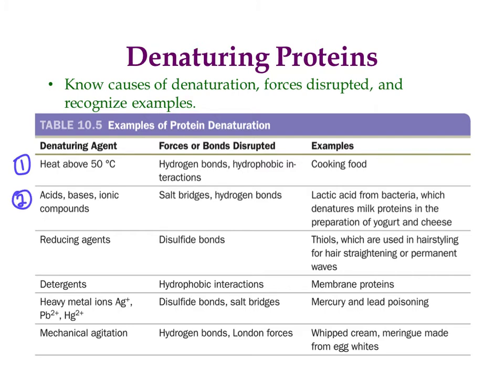Another way is by changing the pH, which could be done by adding acids or bases. A classic example of this is when milk curdles. There are two ways this could happen. You could make it curdle on purpose — either by adding bacteria to make yogurt or cheese, or by adding lemon juice or some sort of acid. The other way is if you leave milk out; it'll start to grow bacteria, and those unwanted bacteria will change the pH and cause the milk to curdle. Don't drink it if it came from that process.